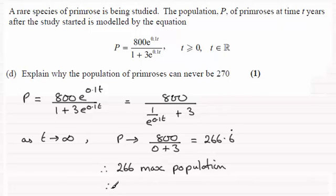So I'm just going to say here, therefore, p cannot reach 270. And there you have it. OK?